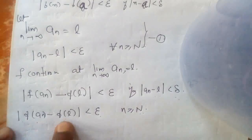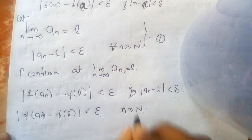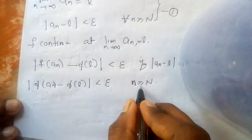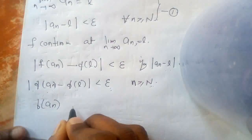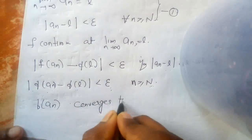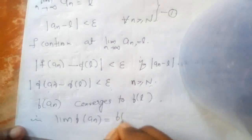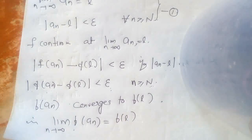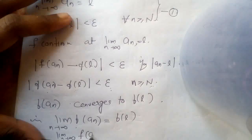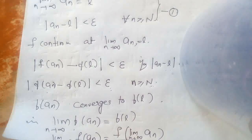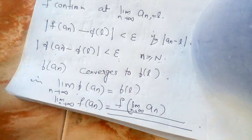Both conditions combine to show |F(a_n) − F(L)| < epsilon for all n ≥ N, meaning F(a_n) converges to F(L). That means limit n → ∞ of F(a_n) = F(L) = F(limit n → ∞ of a_n). So we have proved that limit n → ∞ of F(a_n) = F(limit n → ∞ of a_n).